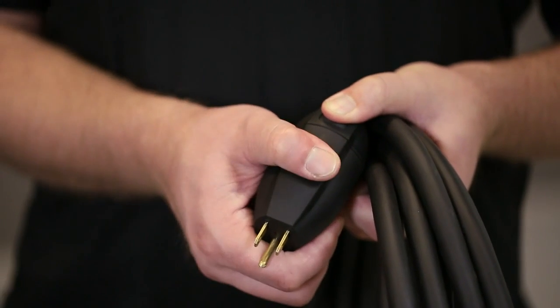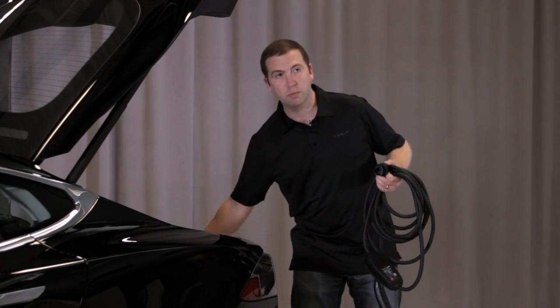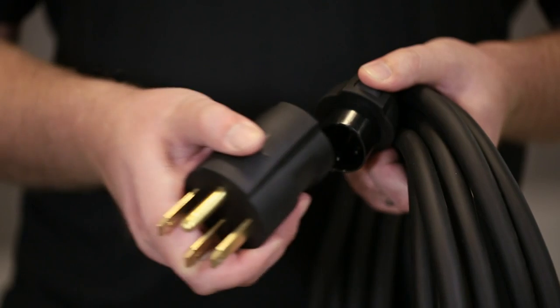To swap adapters, just press the button right on top here, pull it apart, and then you can plug in the other adapter. Put the Tesla T right on top, slide it in place until it clicks, then we'll plug it into the wall first to get charging.